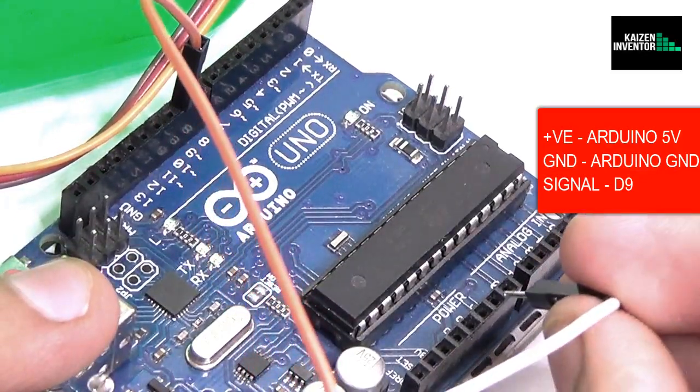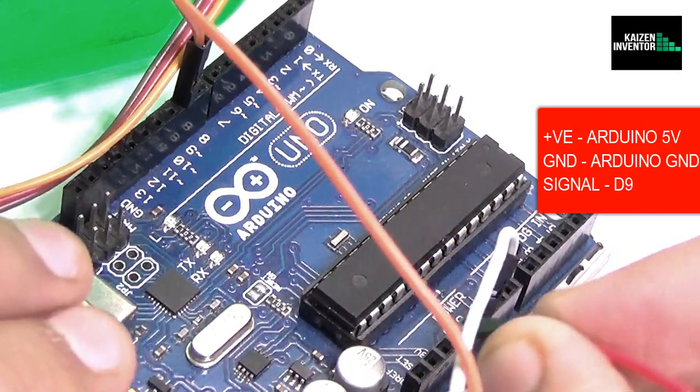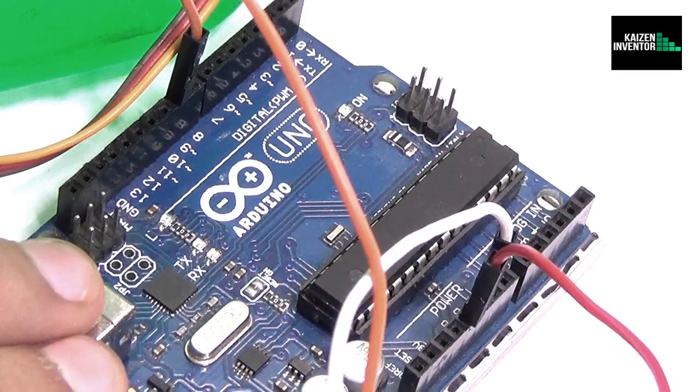The white cable which is the ground would go to the ground pin and the red cable for the power would go to the five volt. So now let's go to the further step.